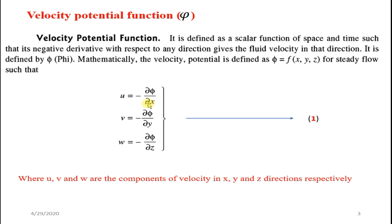When phi is partially differentiated with respect to x, it gives the velocity in the x-direction, denoted by u. Similarly, differentiating phi with respect to y gives velocity v in the y-direction, and differentiating with respect to z gives velocity w in the z-direction. Here u, v, w are the components of velocity in x, y, and z directions respectively.